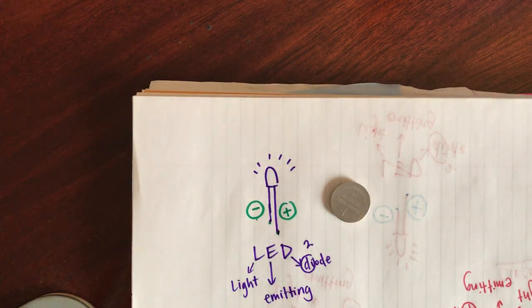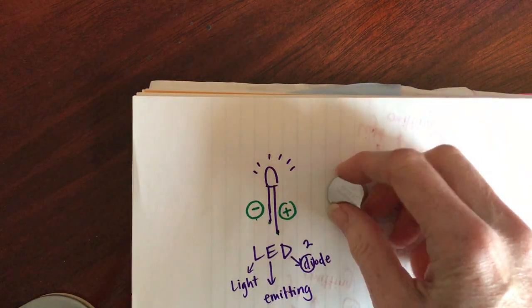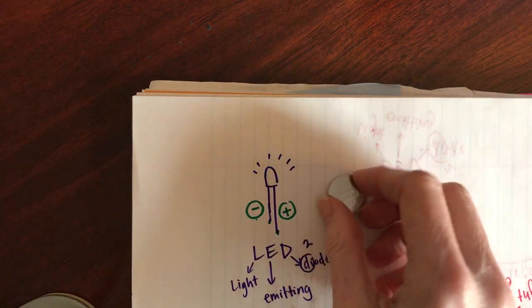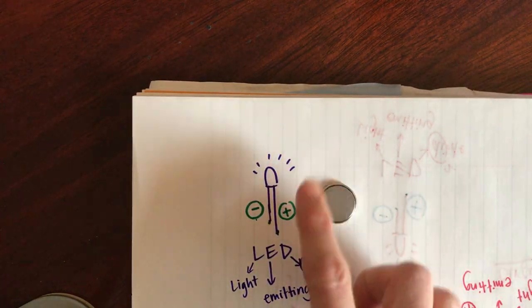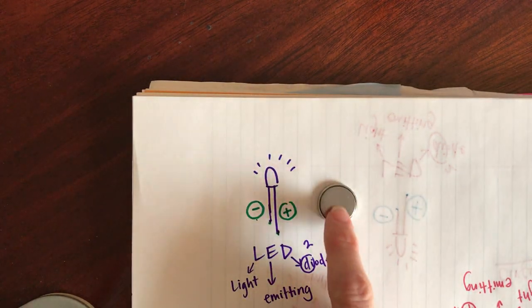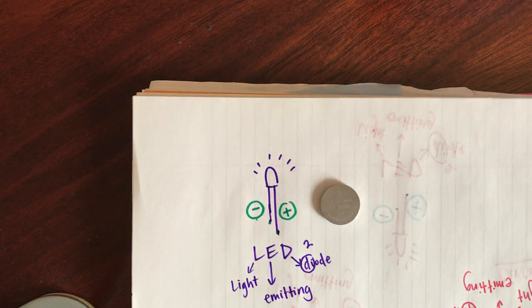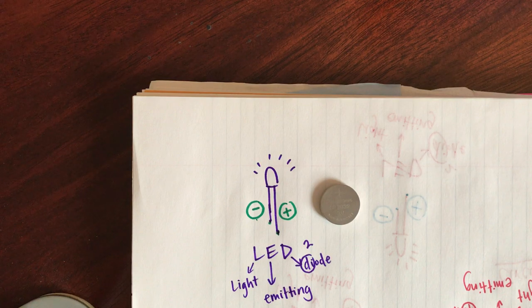And I want you to notice which side has the plus sign on it, which side is going to be positive, and which side has a negative sign or no mark on it at all. And that would be our negative side. So if you need to, go ahead and pause right now and get that battery opened up and on the table in front of you.